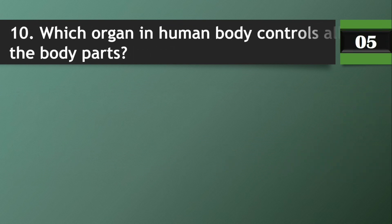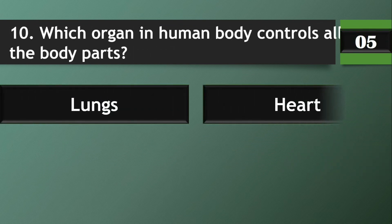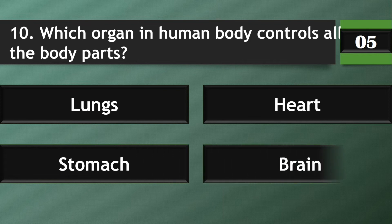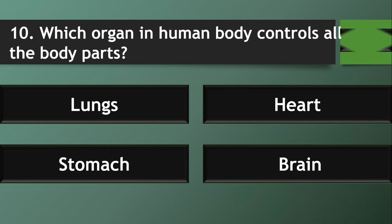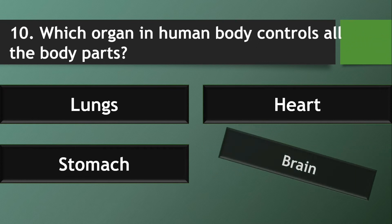Question 10: Which organ in the human body controls all the body parts? Answer: Brain.